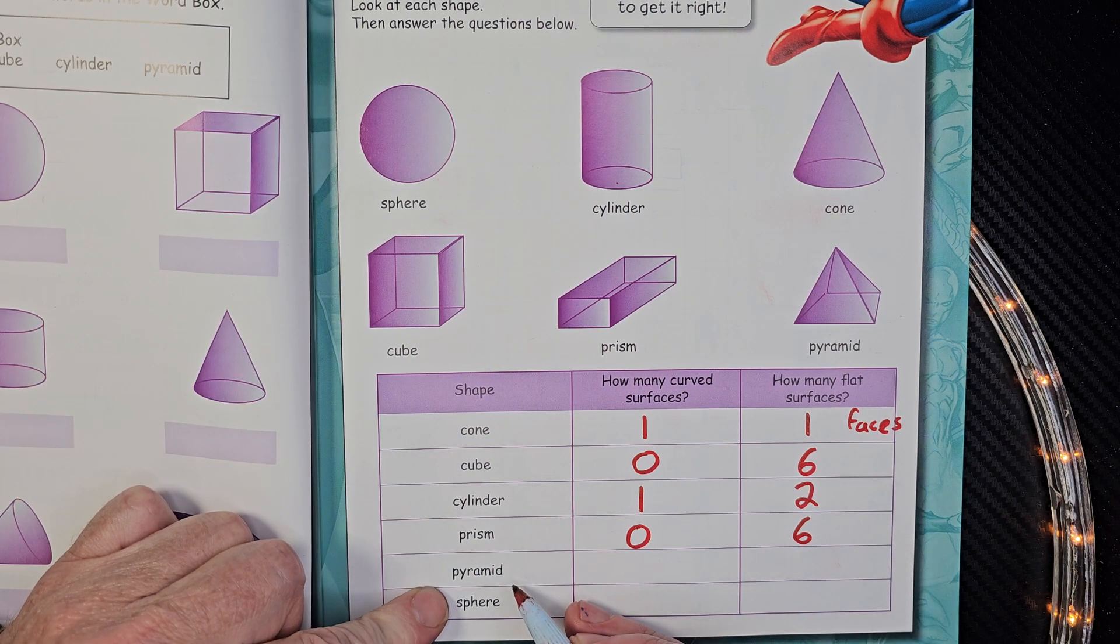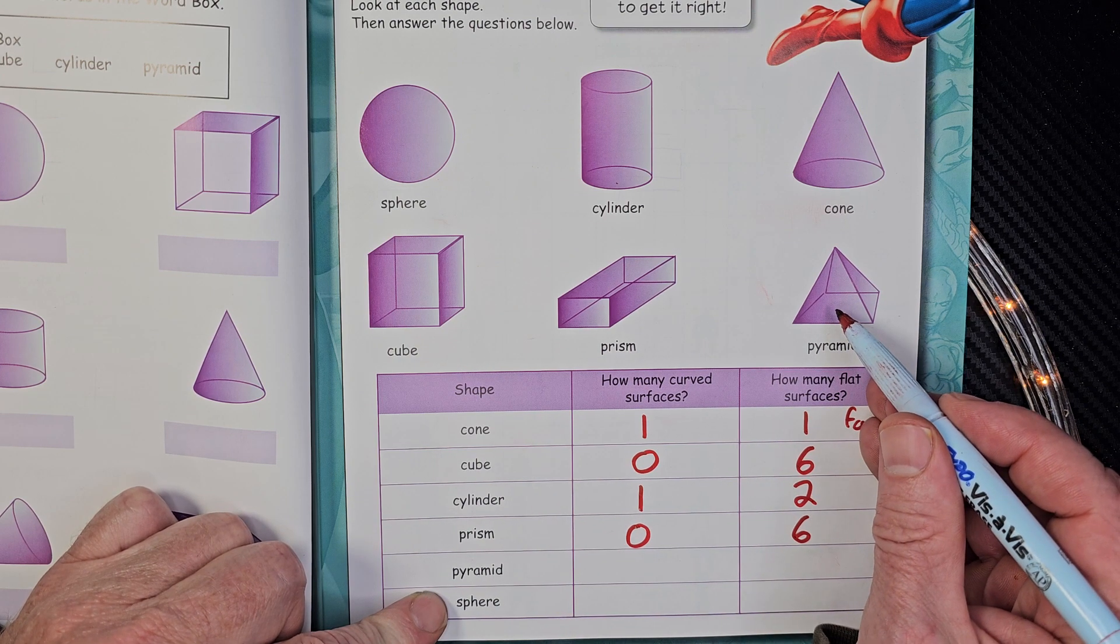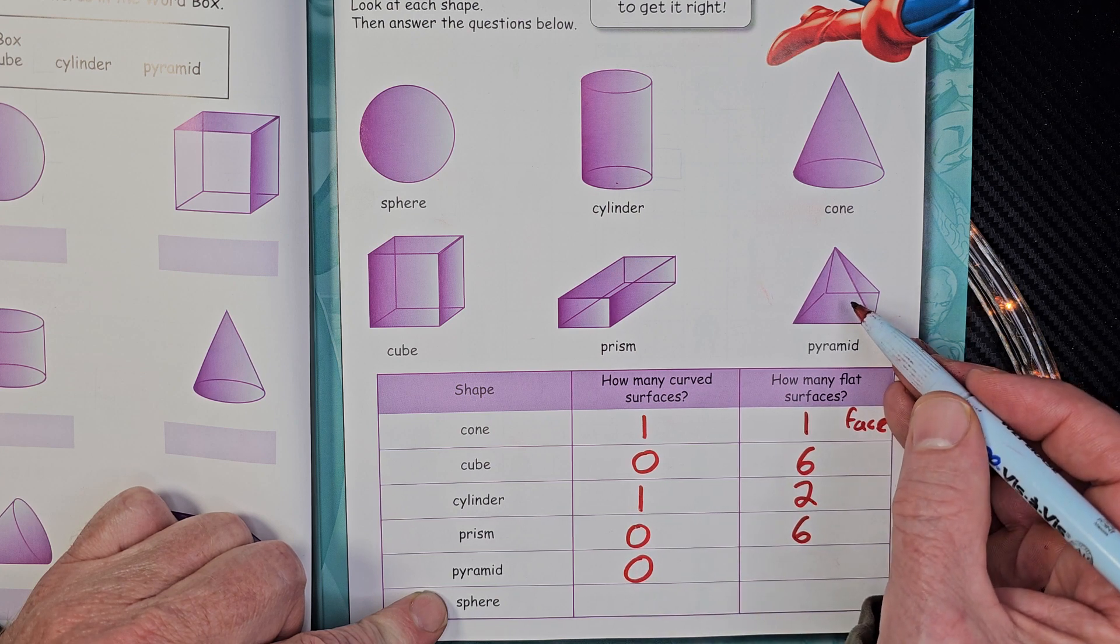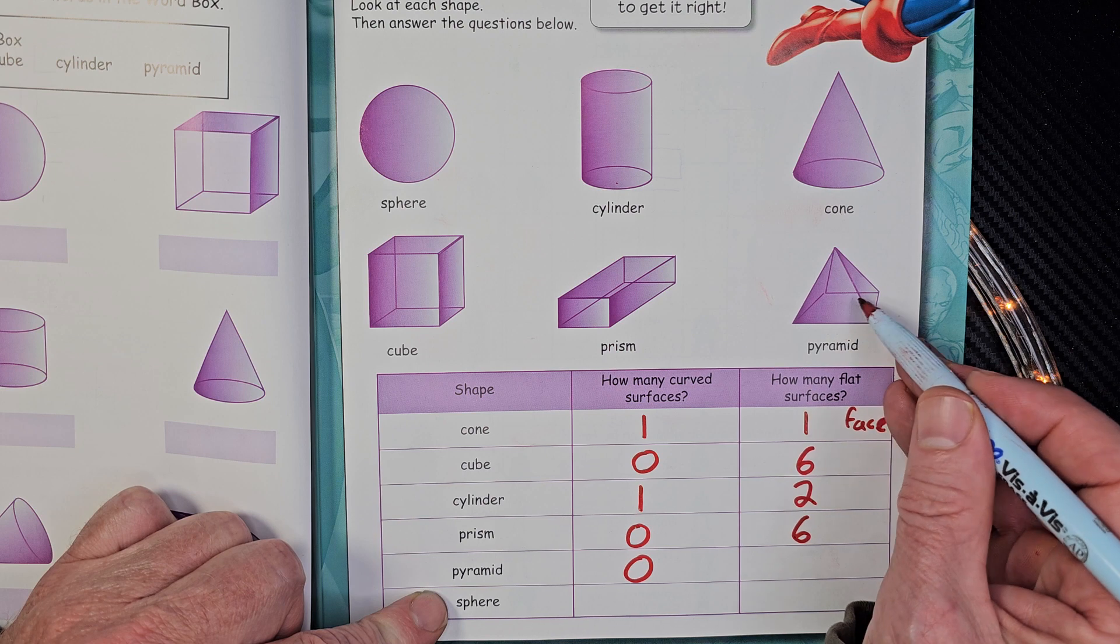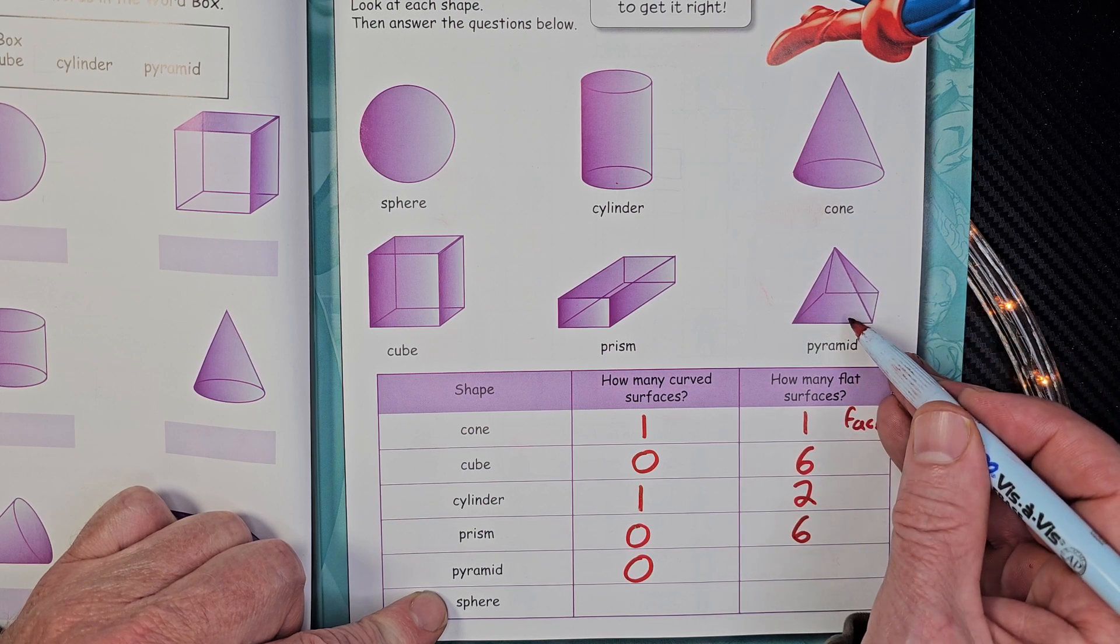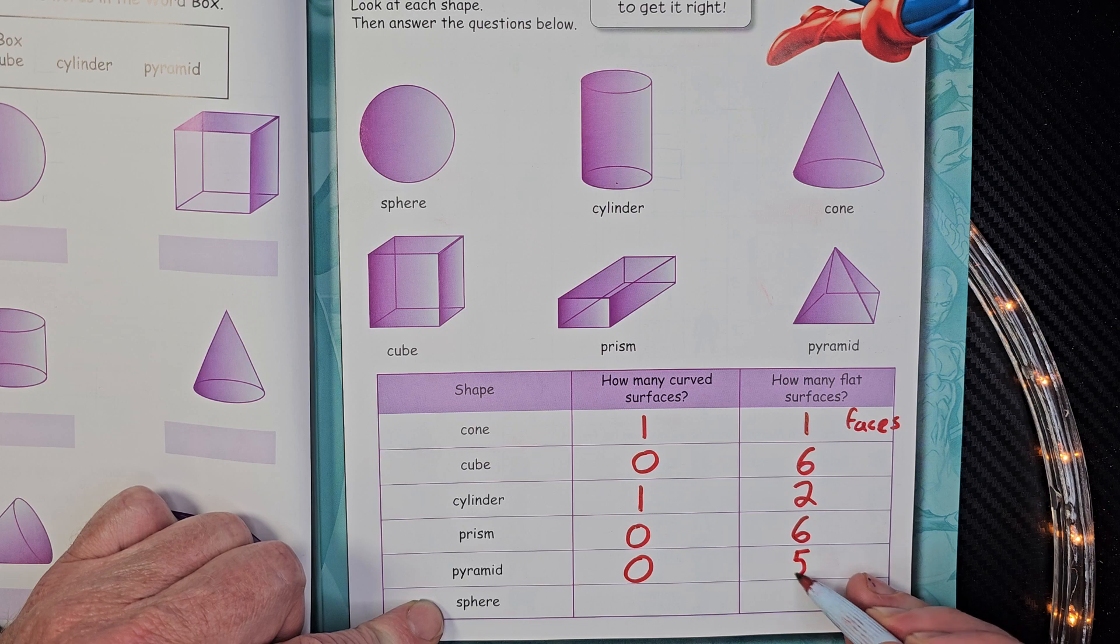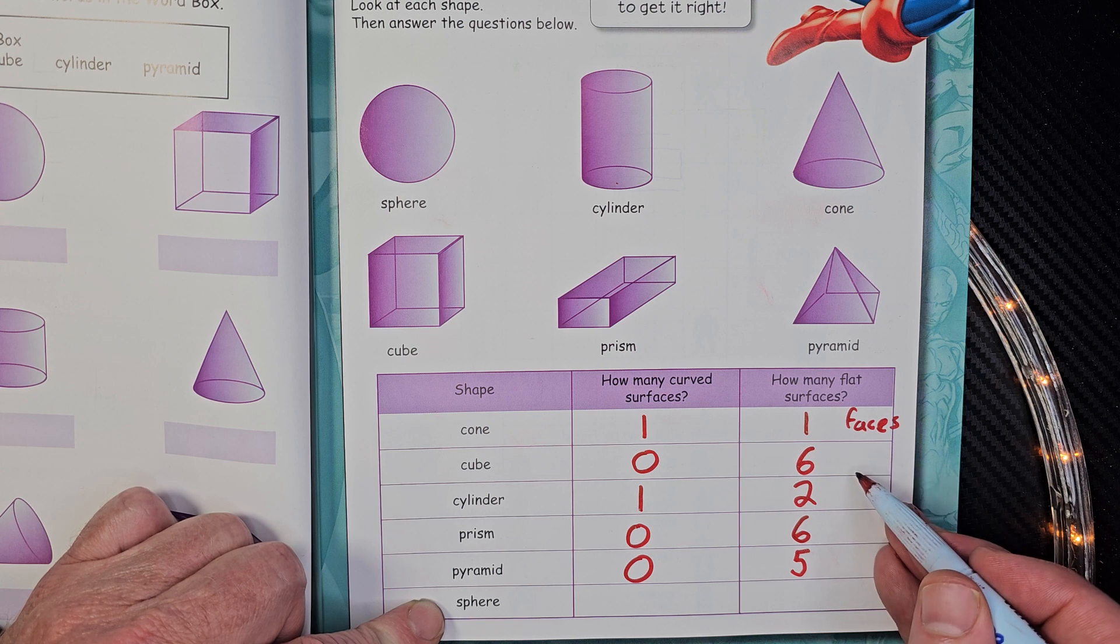Pyramid, like in ancient Egypt, we have zero curved surfaces. And I'm going to count the flat surfaces. We have one, two, three, four, and then five on the bottom. So, we have five flat surfaces or five faces, flat faces.